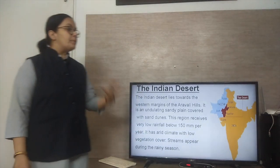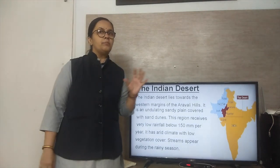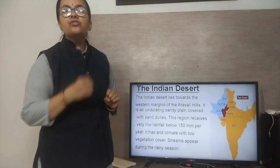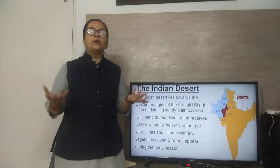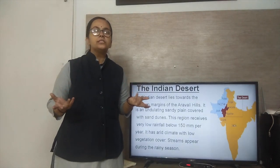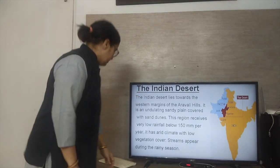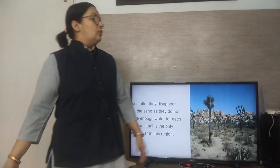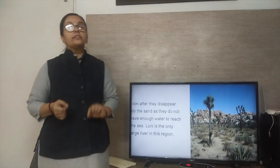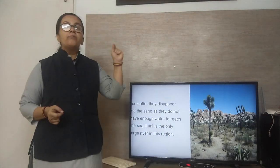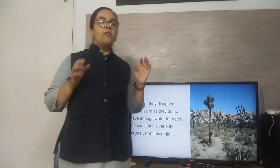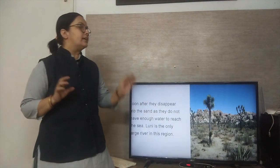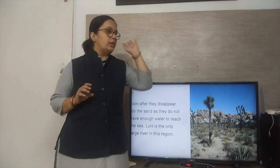Streams appear during the rainy season — during the monsoon season we can see some streams appearing, but after the monsoon season they disappear. There is only one large river in this Thar Desert, and that is the River Luni.